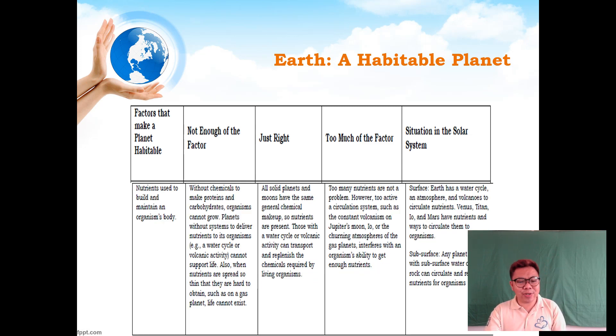Let's talk about the third factor: nutrients. Nutrients are used to build and maintain an organism's body. If nutrients are not enough, without chemicals to make proteins and carbohydrates, organisms cannot grow. Planets without systems to deliver nutrients to organisms, like without a water cycle or volcanic activity, make it hard for organisms to have life existence. If nutrients are spread so thin that they're hard to obtain, such as on a gas planet, life cannot exist.